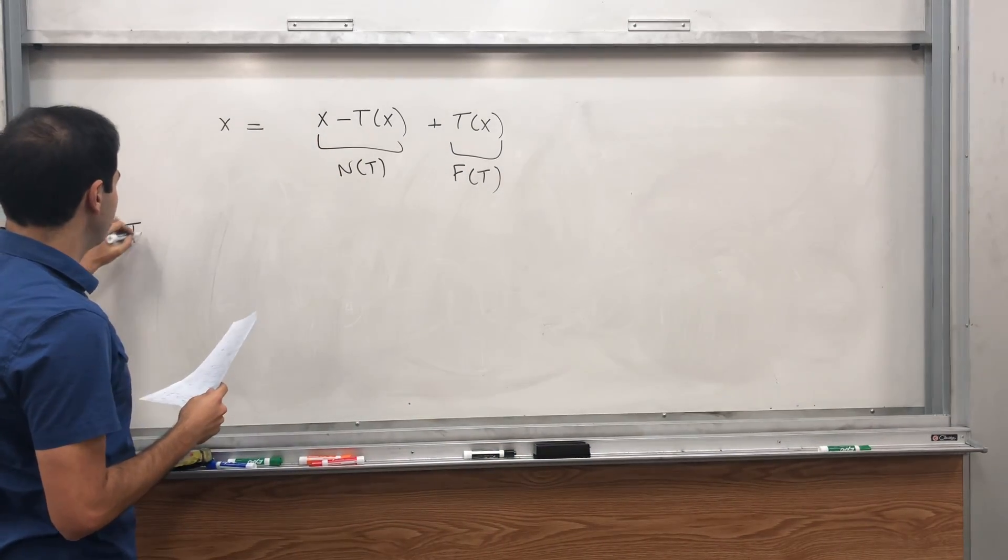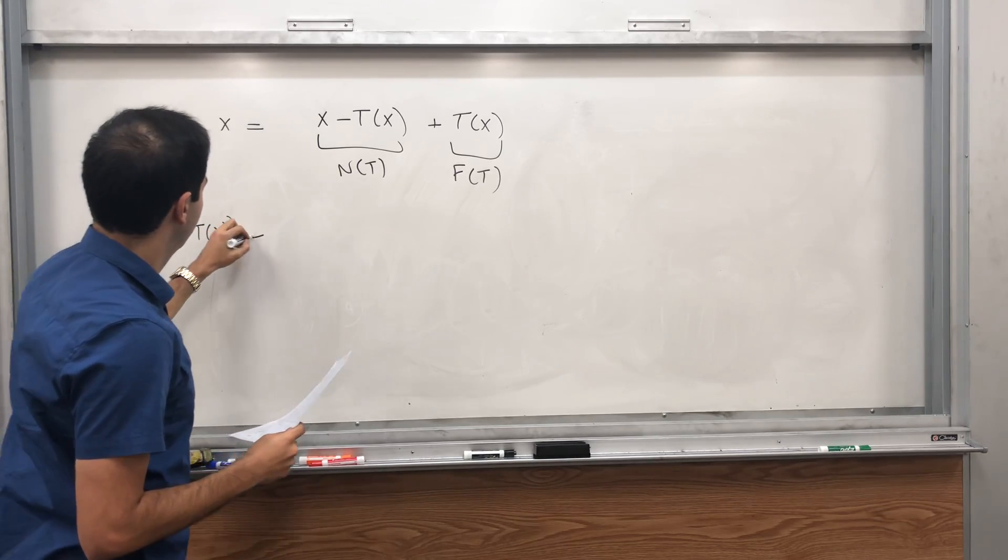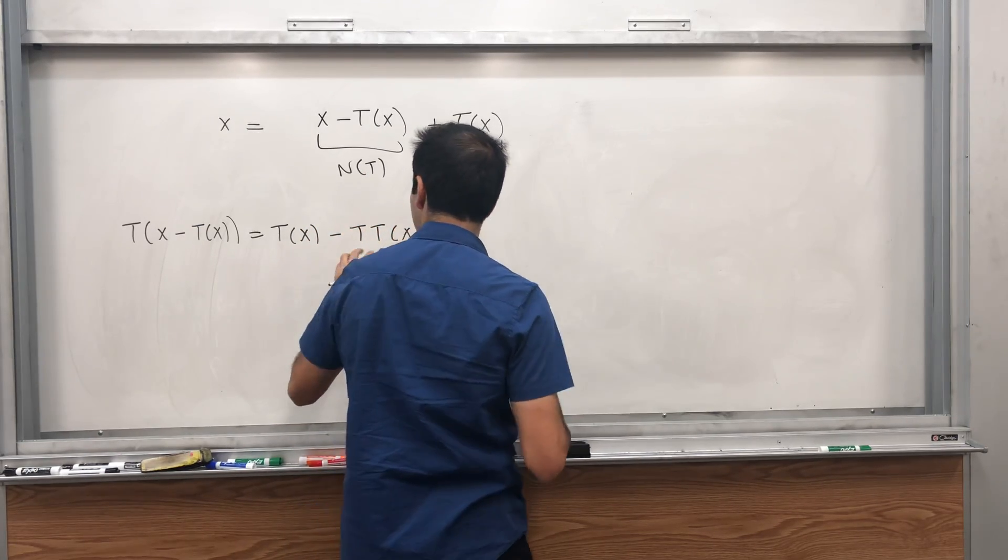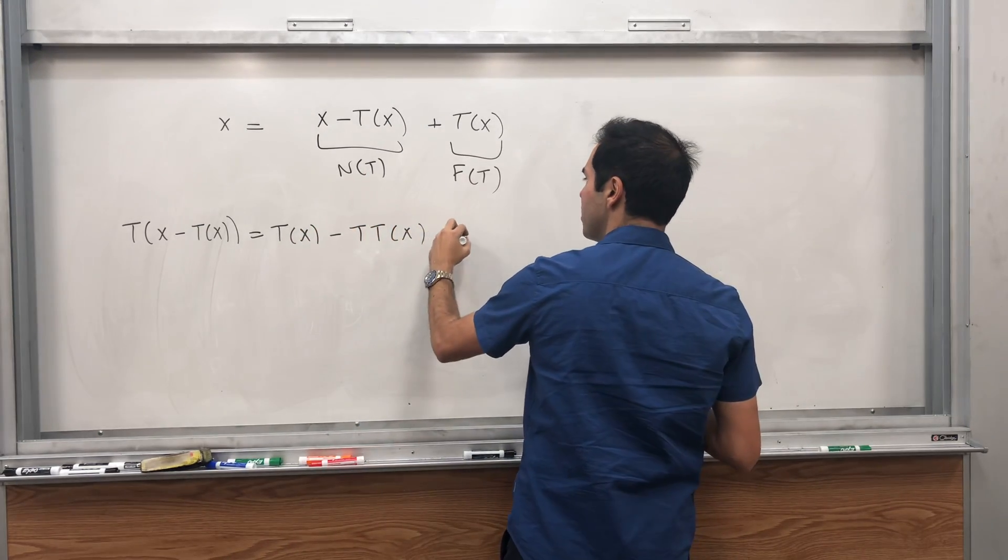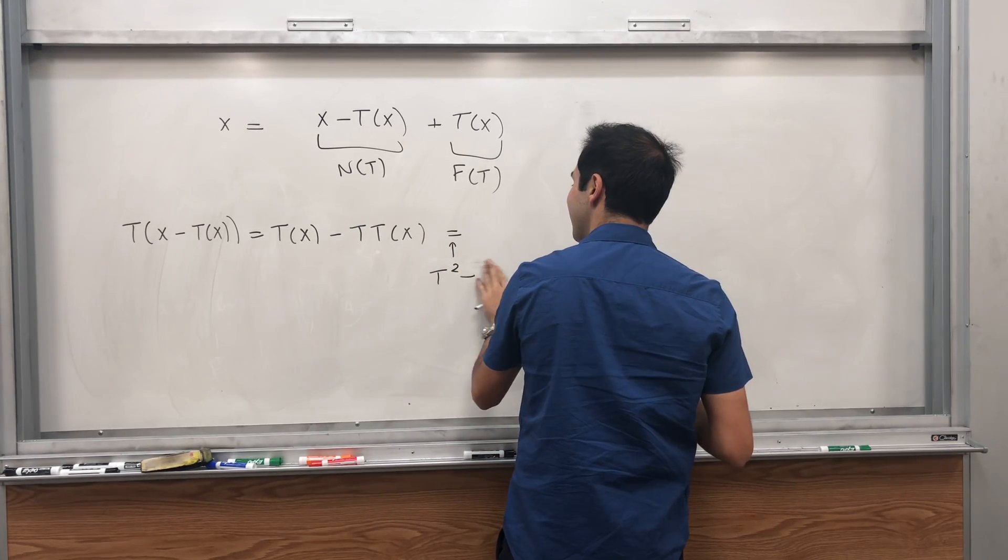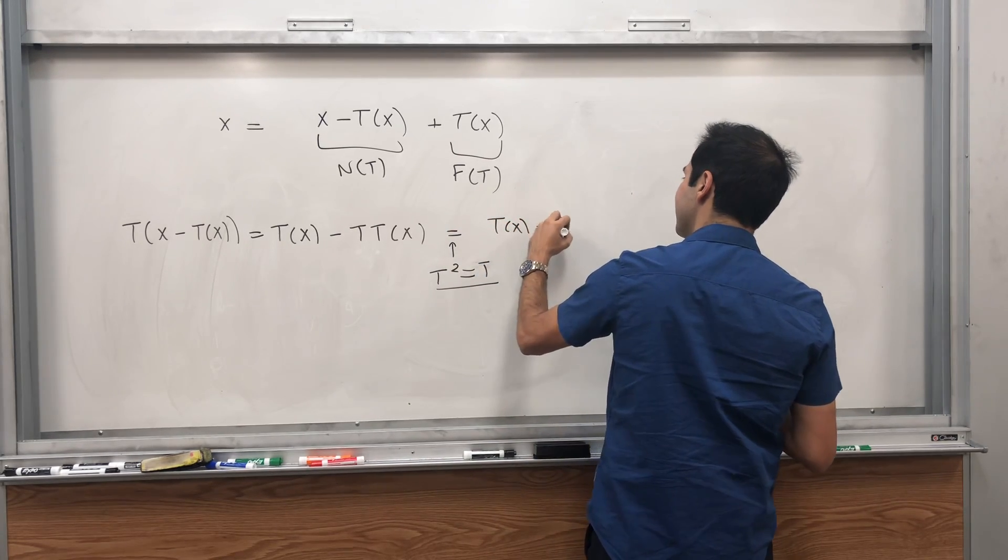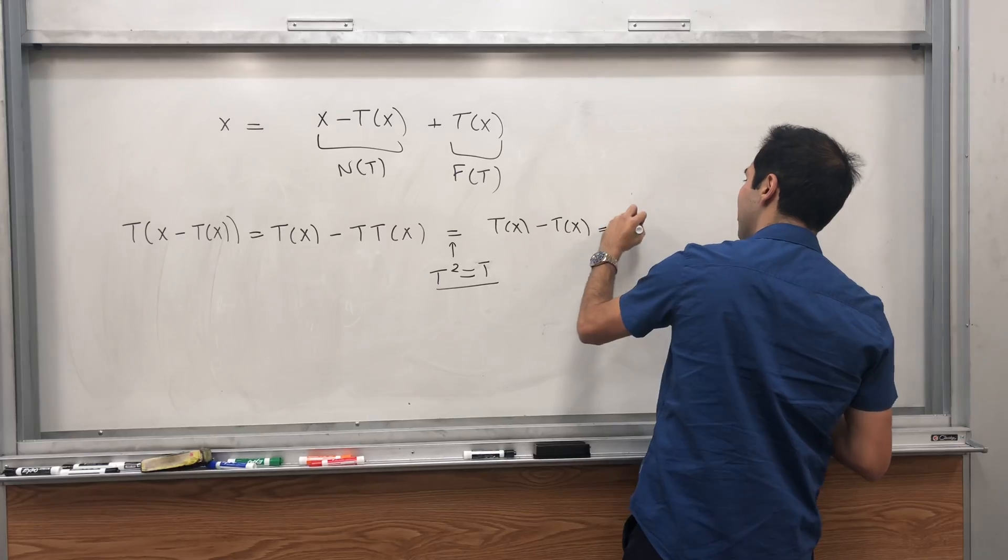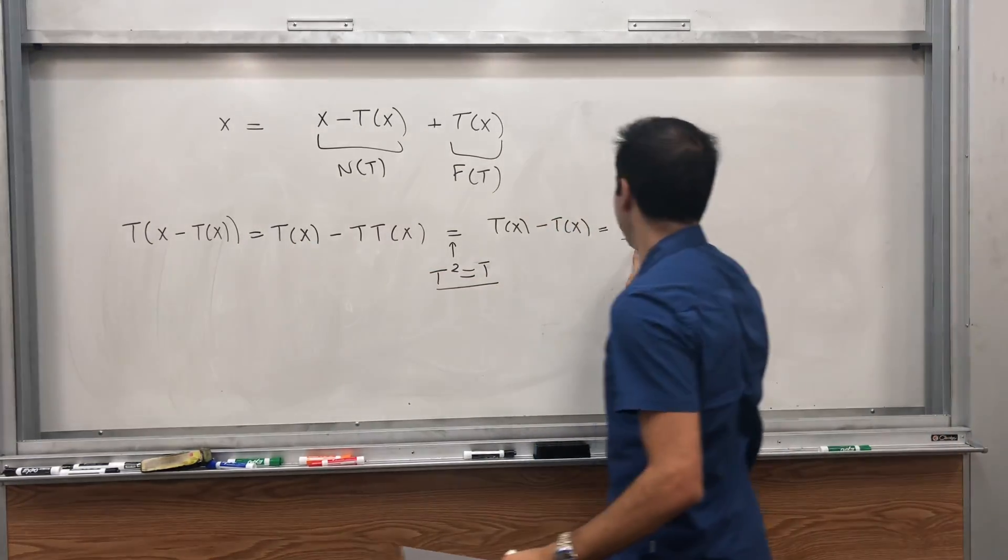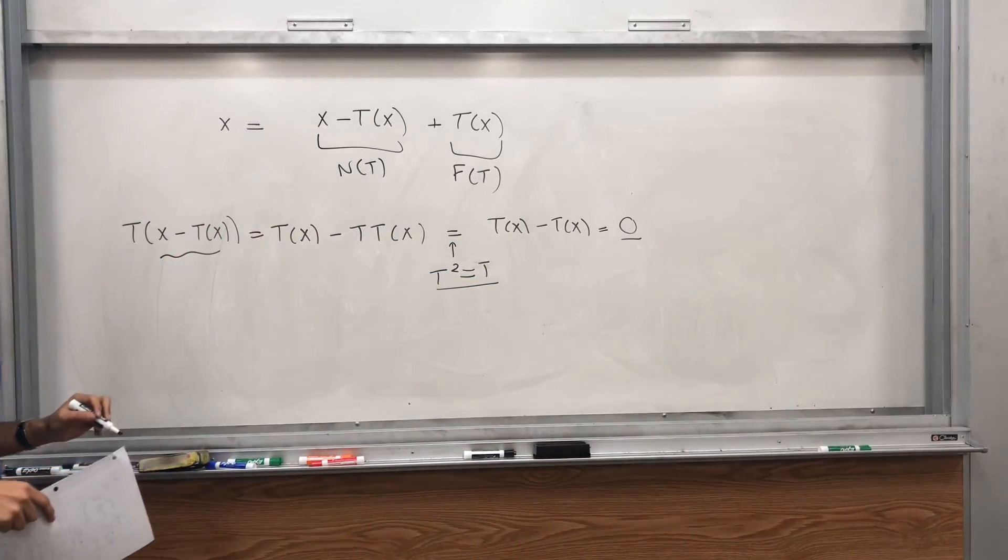Okay, why is this in the null space? Well, let's calculate T of that vector. Well, that's T(x - T(x)). But T T, it's T squared, which is T. Remember, it's a very important assumption that the square of T is just T. And so that's T(x) minus T(x). And that's zero. So in other words, what does T do? It sends x minus T(x) to the zero vector. So that vector is precisely in the null space.